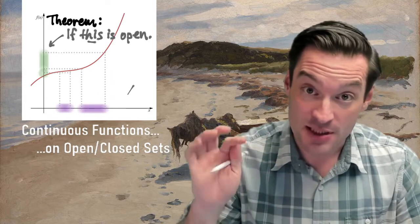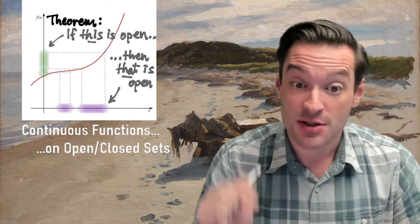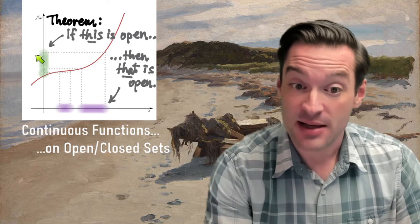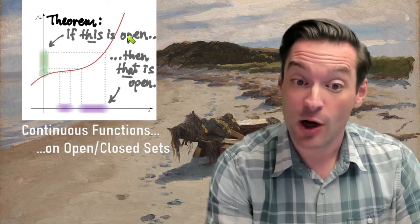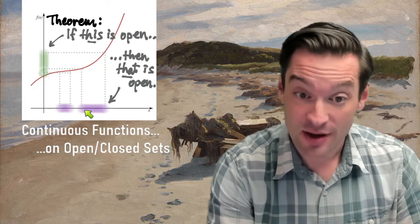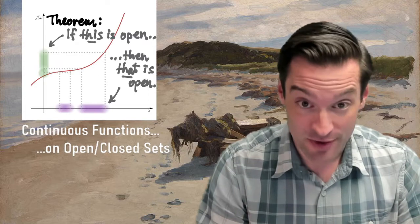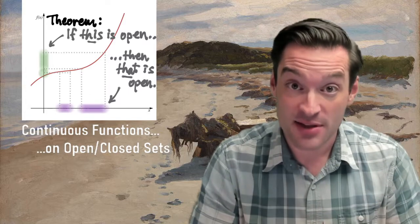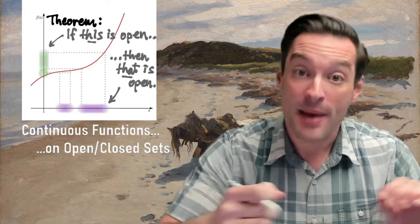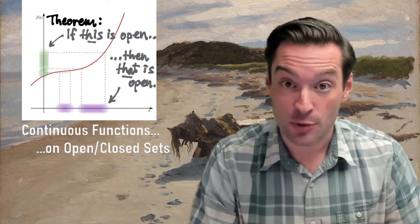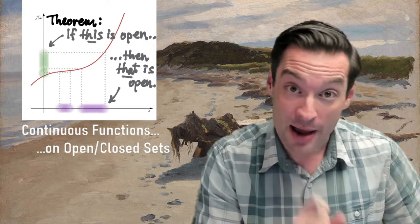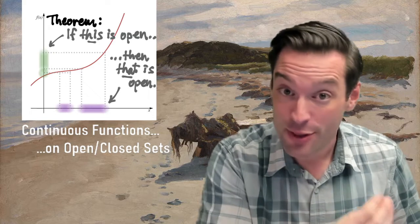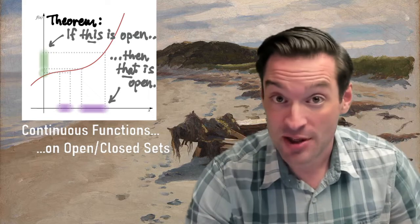The main result of this video is the most important thing to know about how continuous functions and topology interact. That is: if you give me a subset of the codomain of a function which is an open subset, then the inverse image of that open set as a subset of the domain is open. The inverse images of open sets under a continuous function remain open sets. This is the topological result that powers everything else we're going to learn about continuous functions, and we'll get some immediate recognizable calculus theorems falling directly out of this in just a couple more videos.